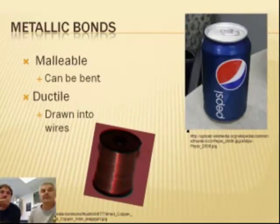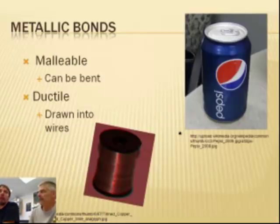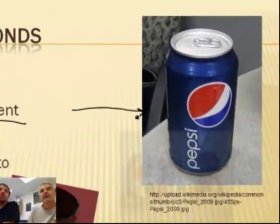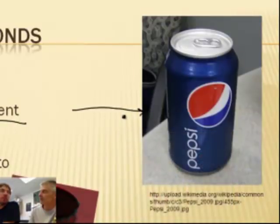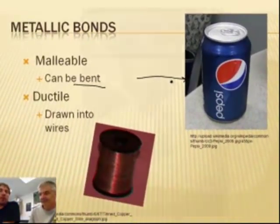Some other properties, Mr. Sams, about metallic substances is that they are malleable. I love that word. Malleable. Malleable means that it can be bent. So if I take this pop can, I can crush it in my hands because it's malleable. That means it can be bent, or you can take a piece of metal and bend it, or you can even hammer it out into a sheet.